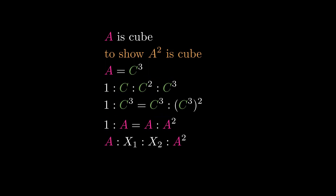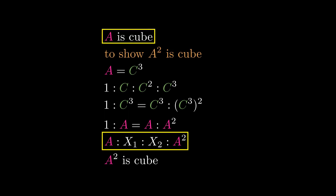So a and a squared are similar solid numbers. Since a is a cube, a squared is a cube.